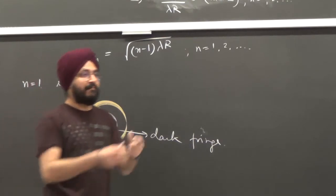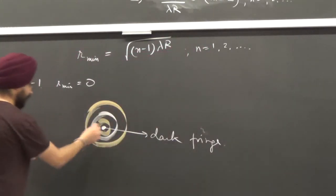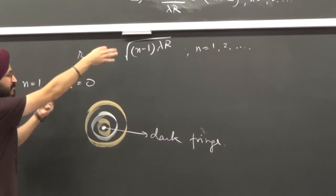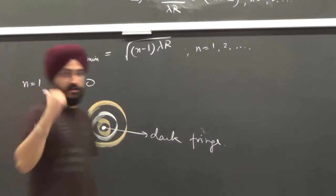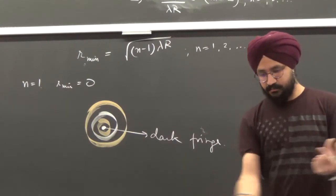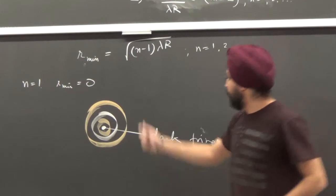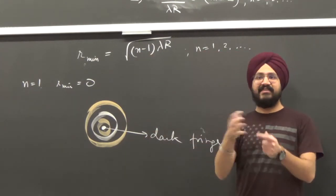Just by measuring these rings — how far apart r_min and r_max are — I could find the wavelength of light. In a typical physics experiment, people do this: they put a lens on a glass plate, observe the pattern, find the distribution of r_min and r_max, and from there measure the wavelength of light.